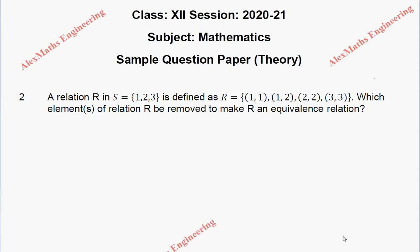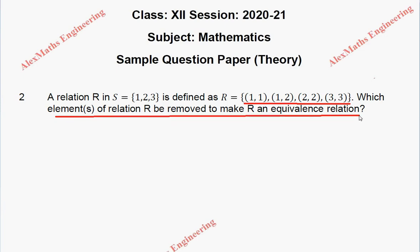Hi students, this is Alex here. Question number 2. There is a relation R having the elements (1,1), (1,2), (2,2), and (3,3). The question is: which element of relation R should be removed to make it an equivalence relation?